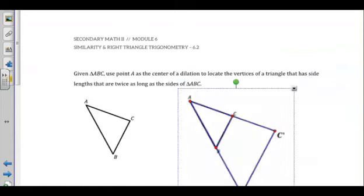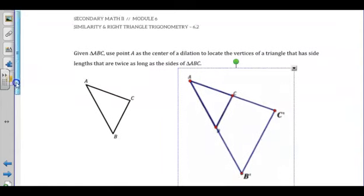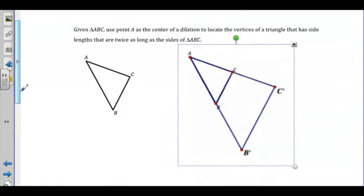Next, we are asked to take a look at this triangle ABC and use point A as the center of dilation to locate the vertices of a triangle that has side lengths that are twice as long. There are several ways we can do this. Some students took rulers and just doubled the side lengths. I actually have created here the image figure that we will end up with.